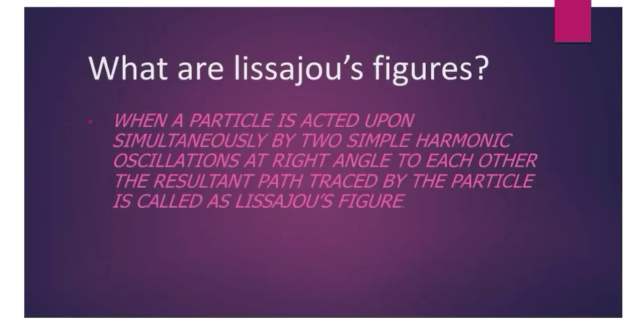What are Lissajous figures? When a particle is acted upon simultaneously by two simple harmonic oscillations at right angle to each other, the resultant path traced by that particle is called Lissajous figure.